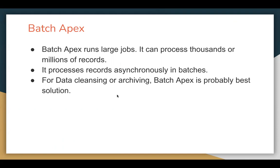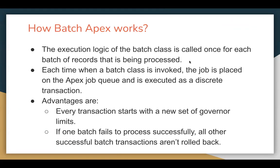The execution logic of the batch class is called once for each batch of records being processed. When a batch class is invoked, the job is placed on the Apex job queue and executed as a discrete transaction. Every transaction starts with a new set of governor limits, and if one batch fails to process successfully, all other successful batch transactions are not rolled back. These are two major advantages of using Batch Apex in Salesforce.